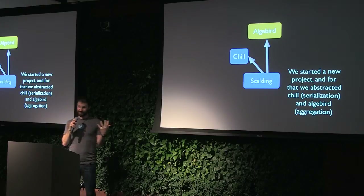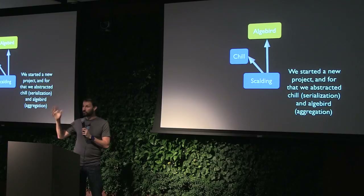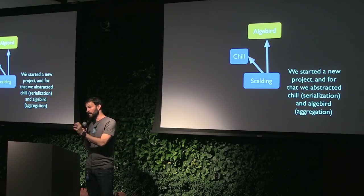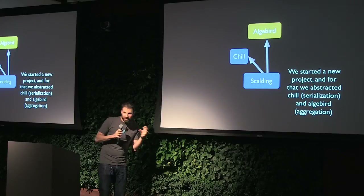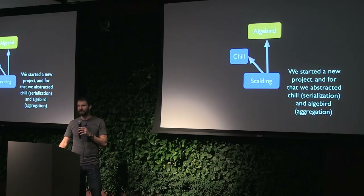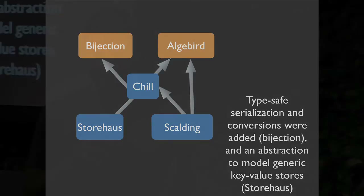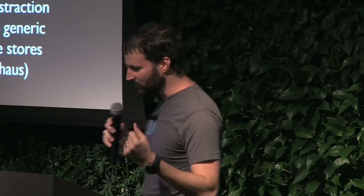Then there's Algebra — we built it to generalize aggregations, to model aggregations in an algebraic way, used from our new project called Summingbird. We started peeling these things out as separate libraries. Next came Bijection: a bijection is a pair of functions that go between two types so you can go from T to U and back to T and it always works. They form a category, so they compose really well — if you have a bijection from A to B and B to C you can glue them together to get A to C.